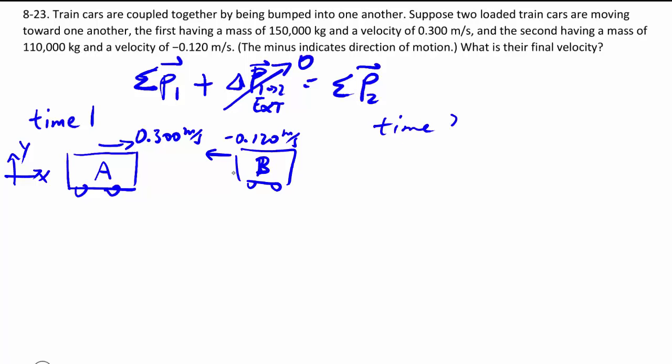And then later on in time two, the two cars are now stuck together, because they are, as they say, coupled, and they travel together at the same speed, which we don't know. But we're going to assume that it's going to end up traveling that way for now. So this is assumed. If after our calculation, it works out that it's a negative number, we know it goes the other way. So generally, we assume that it goes in a positive direction.